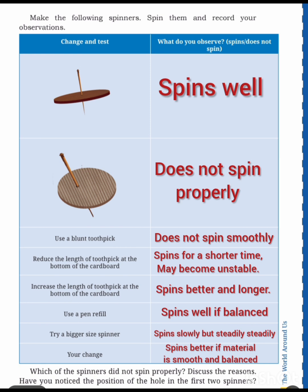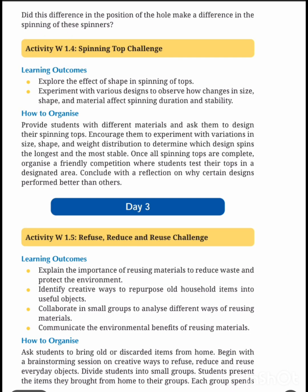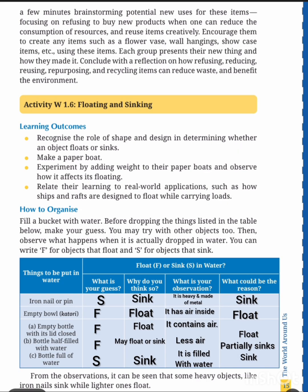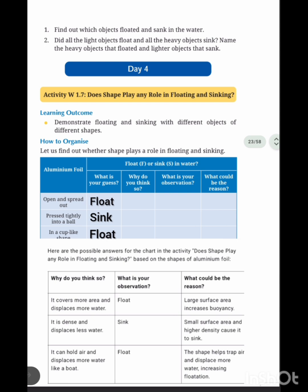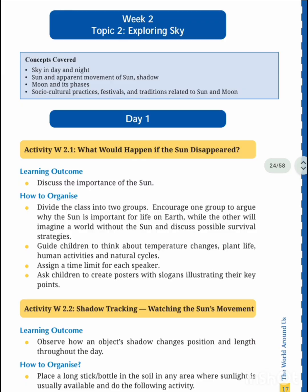Change and test. Next, what do you observe in the picture — you have to write the observation in the next column. Next is learning outcomes for day three. In day three activities, they gave float and sink object information — you have to find out whether the object is sink or float. Fill the complete table. Next is about day four activity worksheet number 1.7 — answers are given under the column. What is your observation and what could be the reason — answers are also there.